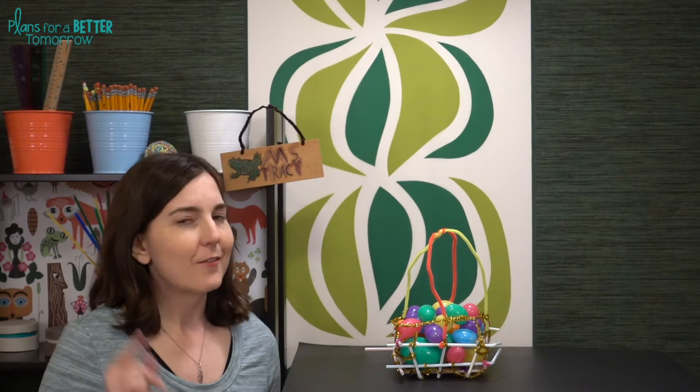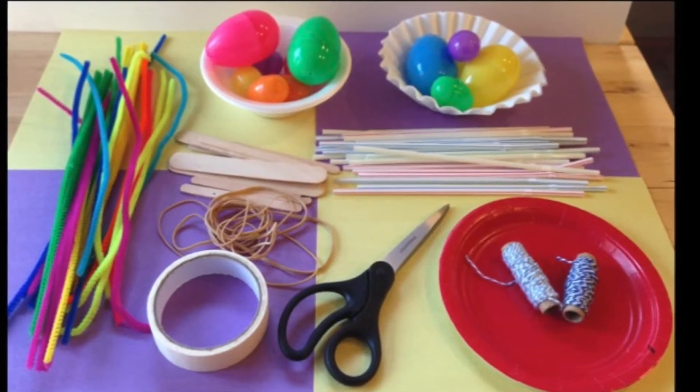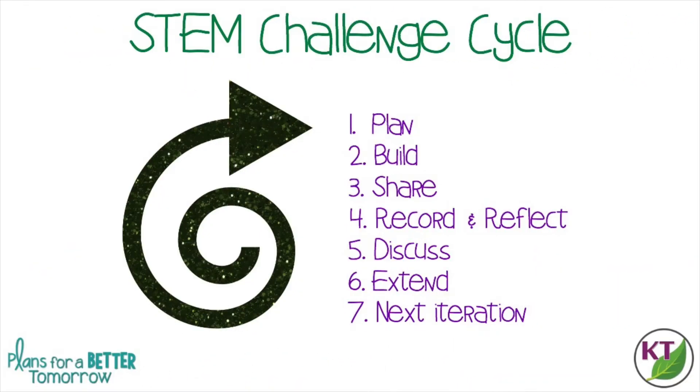Before I get ahead of myself, let's check out the materials and the STEM Challenge cycle. This is the STEM Challenge cycle you should follow for every challenge — I've defined each step in another video, with a pop-in card and a link in the description. The first part of the challenge is to make the basket itself. You can have students do that individually, in partners, or in groups — I'd recommend individually or in partners.